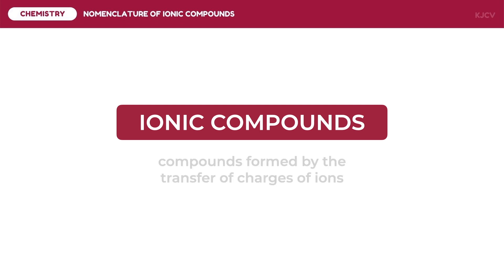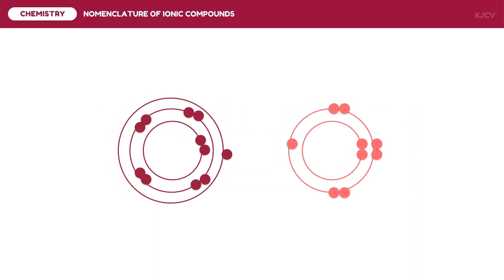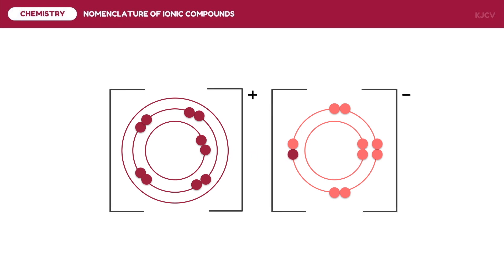Ionic compounds are compounds formed by transfer of charges of ions. Suppose we have two elements. The first element has an excess electron on its outer shell, while the second element lacks an electron. To make up for this, there will be a transfer of electrons. The first element then has a positive charge because it lost an electron, and the other element has a negative charge because it gained an electron. Since there was a transfer of electrons, these now become ions.